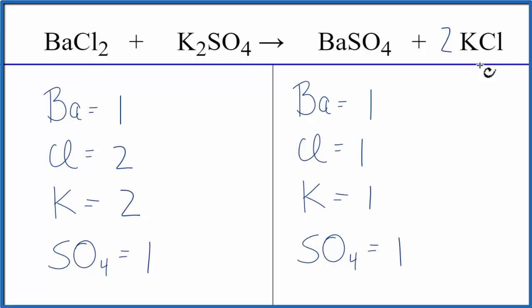The two applies to everything, so 1Cl times 2, that'll give us two. Those are balanced. One potassium times 2, that gives us two. Those are balanced.